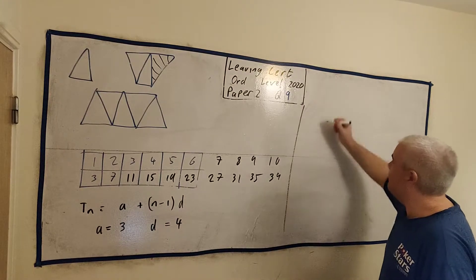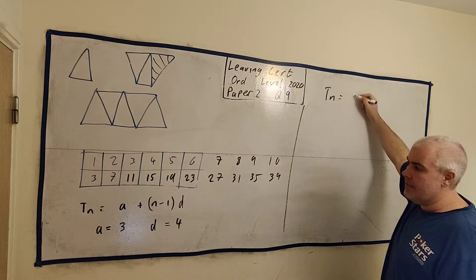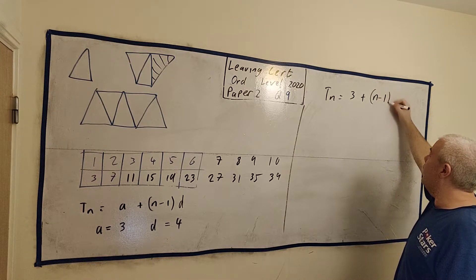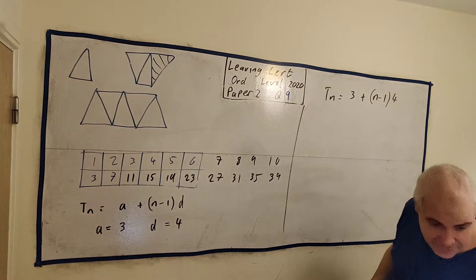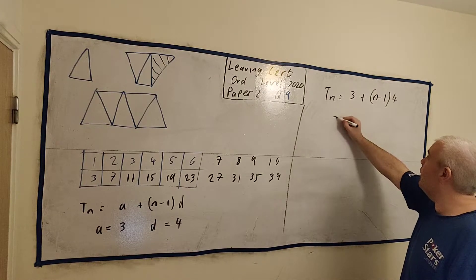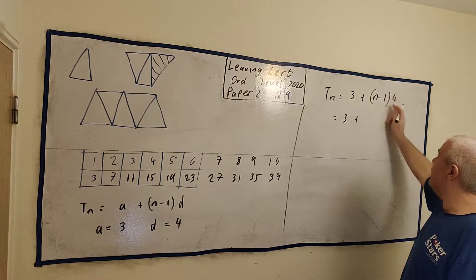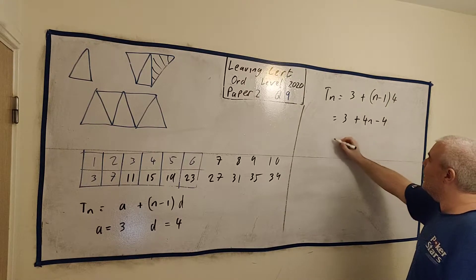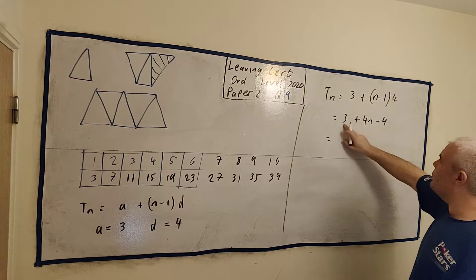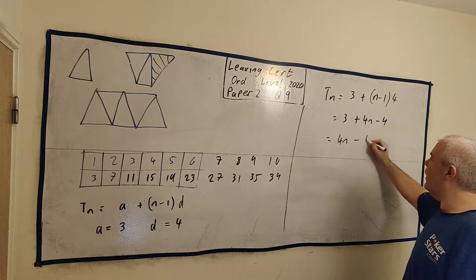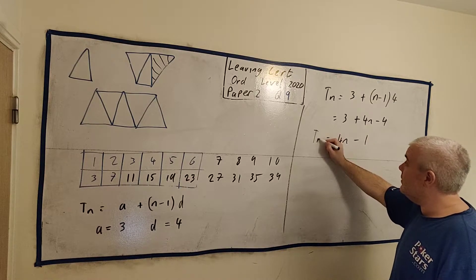So I can write out TN. TN is equal to 3 plus N minus 1 times 4. And I guess that's technically the answer. I wouldn't leave it like that. We can do a bit more. 3 plus 4 can multiply in here. 3 plus 4N minus 4. We have 3 minus 4 is minus 1. 4N minus 1. And that's TN.